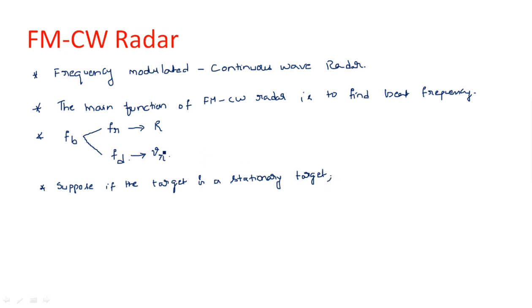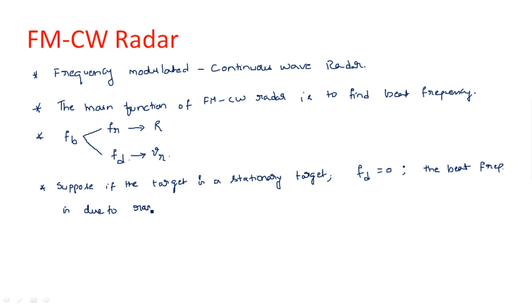If the target is stationary, fr is due to the presence of the target and fd is due to the movement of the target. For a stationary target, there is no movement, so fd becomes zero. Therefore, the beat frequency is purely due to the range frequency fr — that is, fb equals fr for a stationary target.